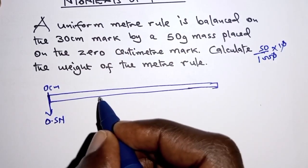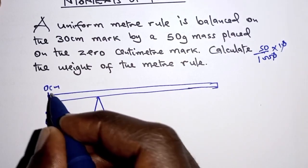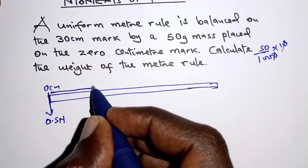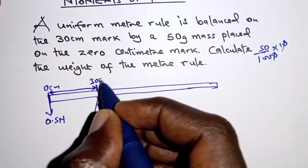And the meter rule is balanced at 30 centimeters mark from this end. So up to this point we have 30 centimeters. So here we have 30 centimeters mark.